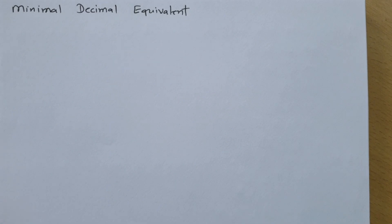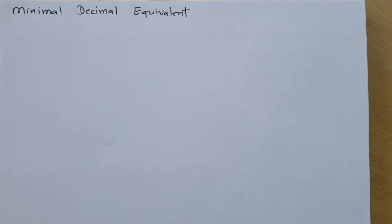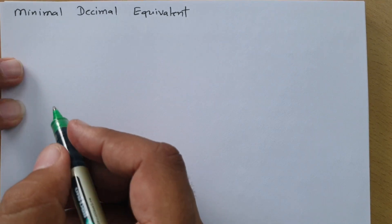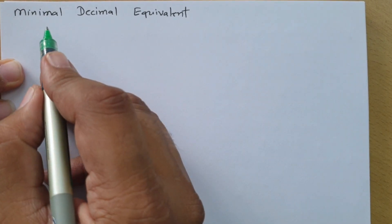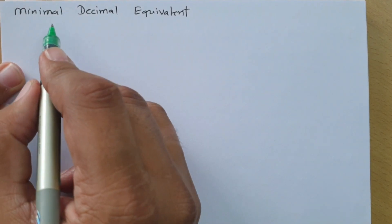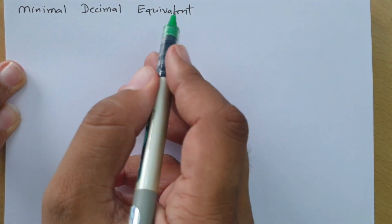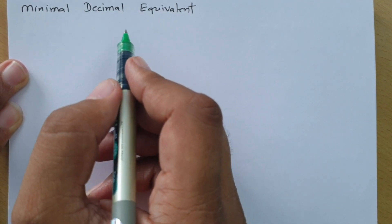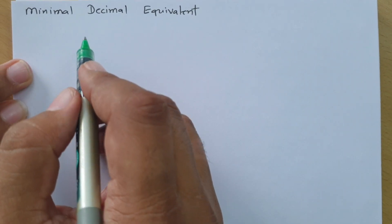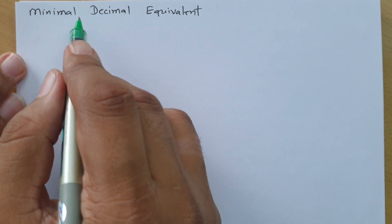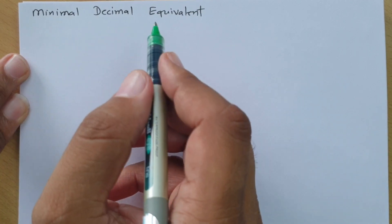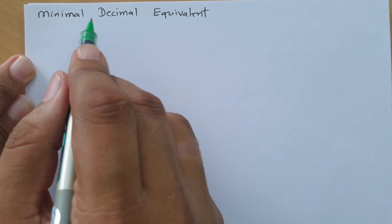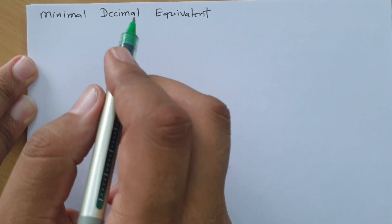Welcome to Digital Electronics Lecture Series. I, Professor Itesh Dolakya, am going to explain how to identify the minimal decimal equivalent of a given number. This is quite a tricky question, and you will get to know the method after a few examples.